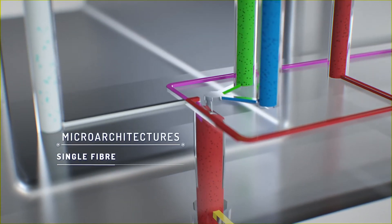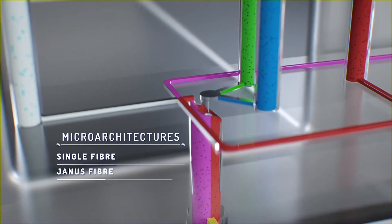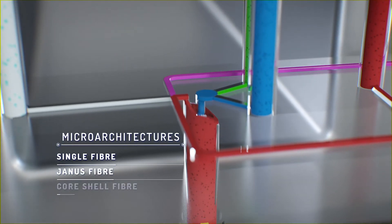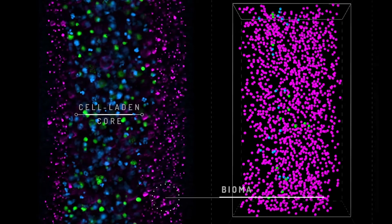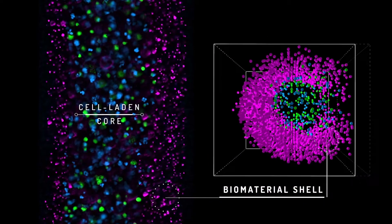The microfluidic printheads can form a variety of patterns and interfaces to recapitulate complex tissue architectures, including core-shell fibers with hollow cores to mimic vessels or tubules, and cell-laden cores to layer or encapsulate cells.